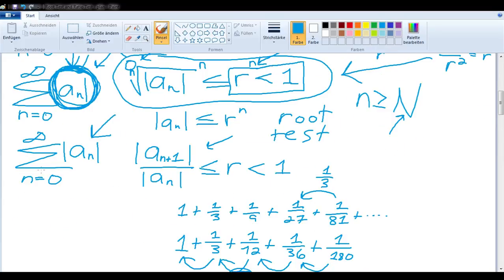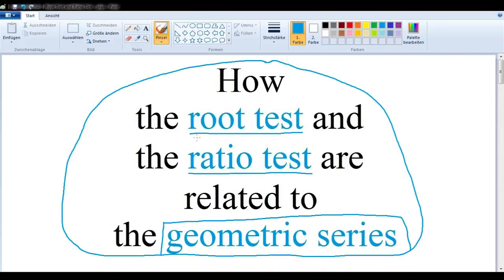And again, the small detail, this would not have to be the case starting at 0. It could also be the case just starting at some big N. So that is how you can see that the root test and the ratio test are actually just versions of the same thing we know about the geometric series.